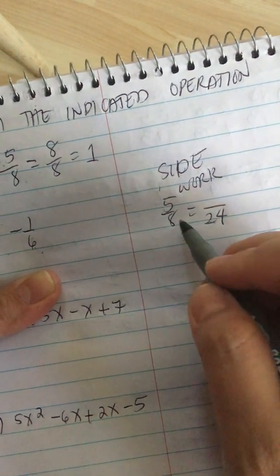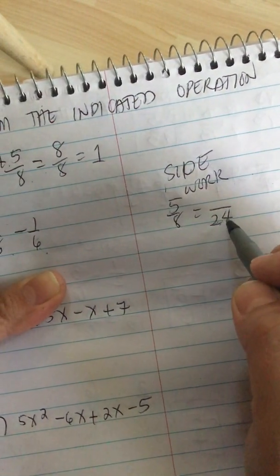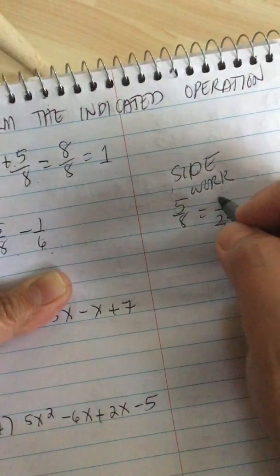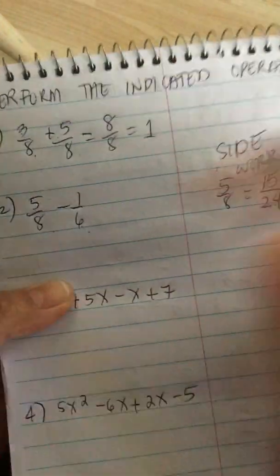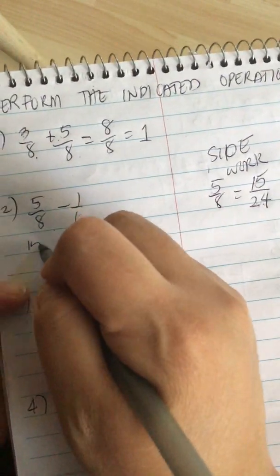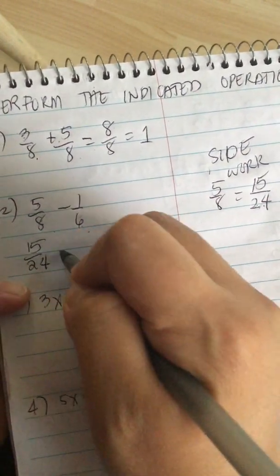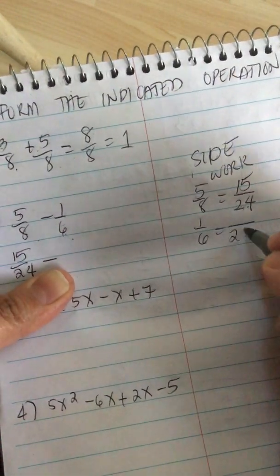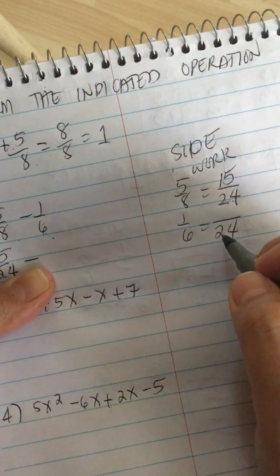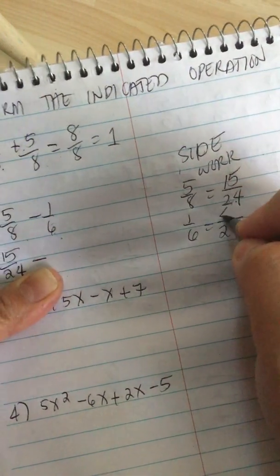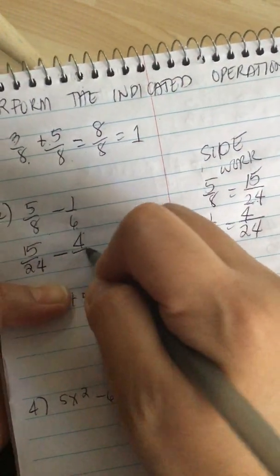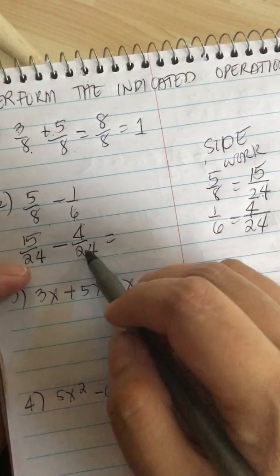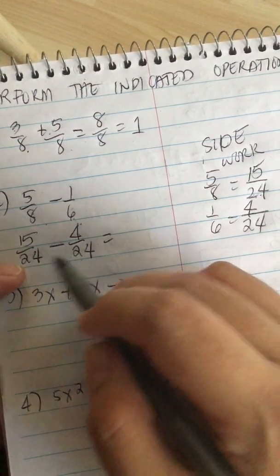So let's continue. 8 goes into 24 three times, and 3 times 5 is 15, so this fraction becomes 15/24. Now we change the 1/6. 6 goes into 24 four times, and 4 times 1 is 4, so 4/24. Now we can subtract them or combine them because they have the same denominator. So 15 minus 4 is 11 over 24.